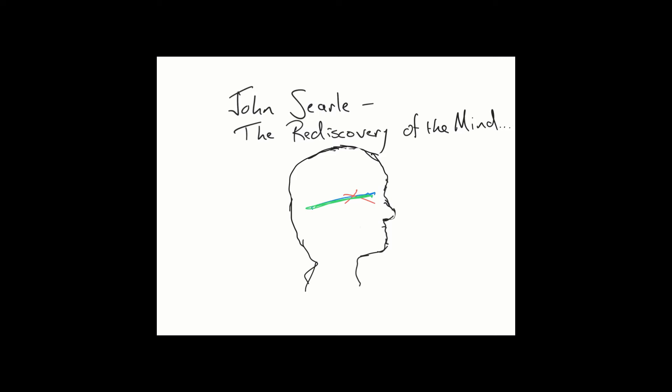But then they identify a problem with the connection between the artificial optic nerve and the occipital lobe, so they go in and replace that too. Imagine this is repeated — now there's a problem with the occipital lobe itself, so they go in and replace it with a large processor.